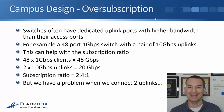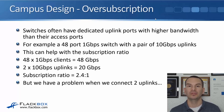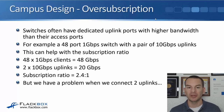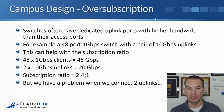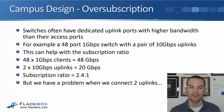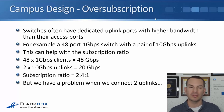Switches often have dedicated uplink ports with higher bandwidth than their access ports — for example, a 48-port 1 Gbps switch with a pair of 10 Gbps uplinks. If you've got 48 one-gig clients, total possible bandwidth is 48 Gbps, but with two 10 Gbps uplinks that's 20 Gbps, giving a subscription ratio of 2.4-to-1. Without those 10 Gbps uplinks, if uplinks were also 1 Gbps, the ratio would be 24-to-1, which is obviously not as good.